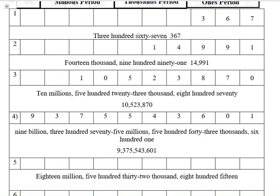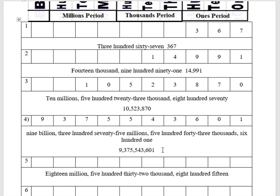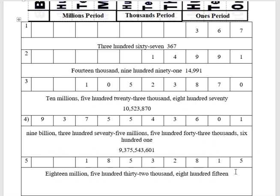Now number five — I wrote out the number in words and you have to supply it as digits. We have eighteen in the millions period, so that's one-eight in the millions. Then five hundred thirty-two in the thousands place: five, three, two. And then eight hundred fifteen: eight, one, five. Once you have it in digits, you can rewrite it in standard form: eighteen million five hundred thirty-two thousand eight hundred fifteen.